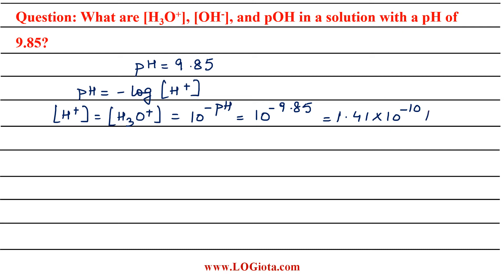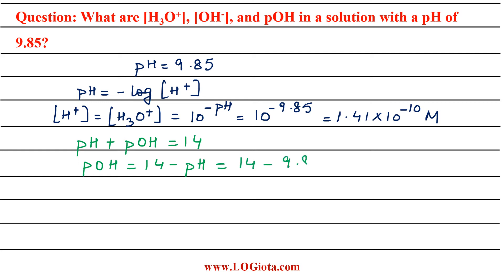As this is a concentration, the units will be molar. Next, we calculate the pOH. We know that pH + pOH = 14, so pOH = 14 − pH = 14 − 9.85. On calculating this we get pOH = 4.15.